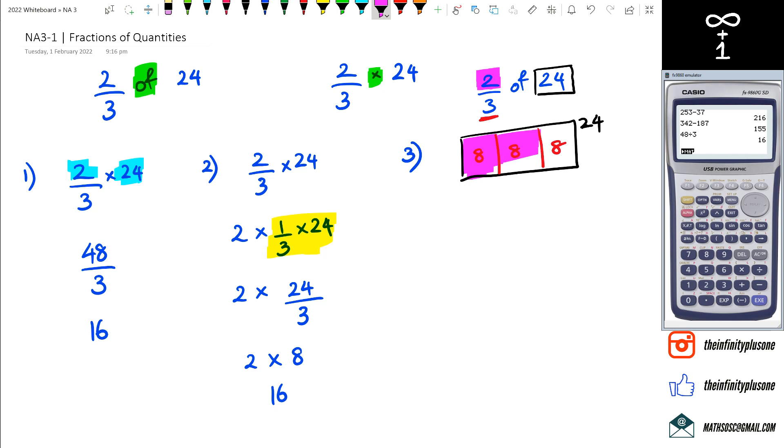You can see two lots of 8, which equals 16. So when you're doing really simple fractions of quantities, you can choose any of these methods to get to that answer of 16. Now if you have this particular calculator or a different calculator, what you could do is...